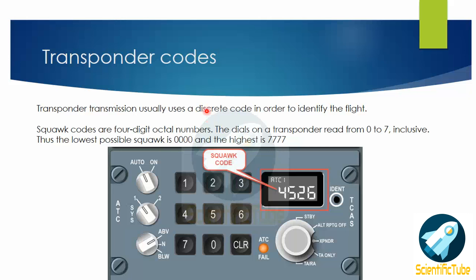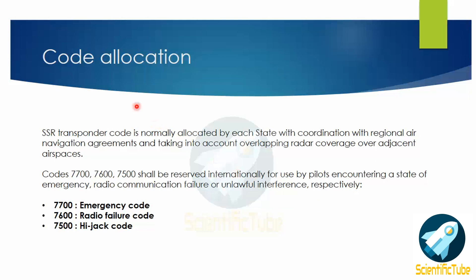Now let's have a look at the transponder codes. The transponder transmission usually uses a discrete code to identify the flight. Squawk codes are four-digit octal numbers. The digits on a transponder read from 0 to 7 inclusive. Thus the lowest possible squawk is 0000 and the highest is 7777. For example, this image shows a transponder code of 4526.